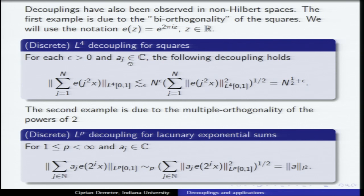There is a second example which, historically speaking, has played a crucial role in mathematics. Note that there is a discrete nature to these examples. Let's look at the lacunary case: a rapidly growing sequence such as 2 to the j. In this case you have a very strong decoupling. It holds for all p between 1 and infinity, and it has to do with the uniqueness of representations of integers in base 2. This is what's behind the so-called Littlewood-Paley theory, which played a tremendous role not only in harmonic analysis but also in PDEs.